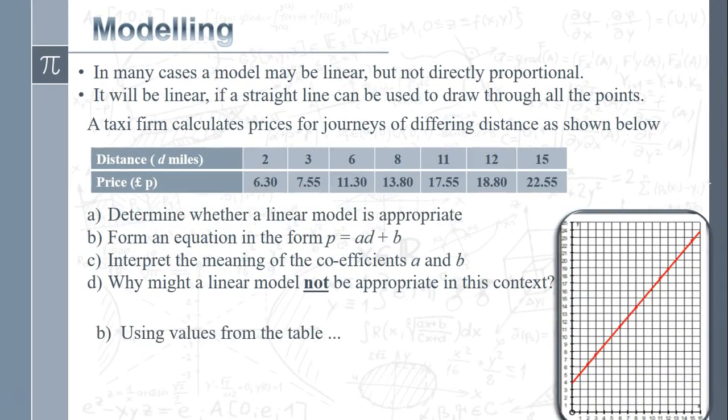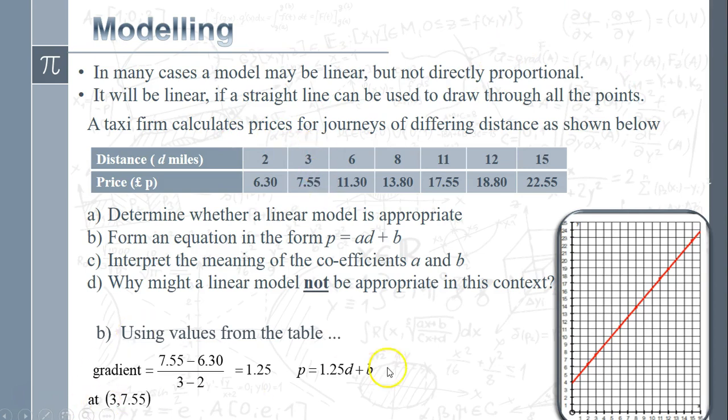Form an equation in the form p equals a times the distance plus b, where a is our gradient and b is the intercept. We've got all the points in a straight line, let's pick some points on the table and do some calculating. We've got a gradient of 1.25. Pick another point - p is 7.55 and d is the three mile journey - and that gives us a value of b which is 3.80. Please remember to write out your equation as a complete equation: p equals 1.25d plus 3.80.